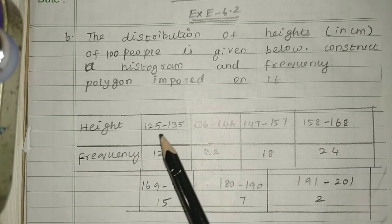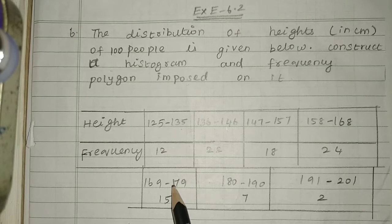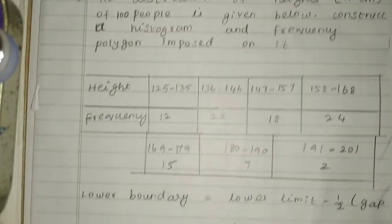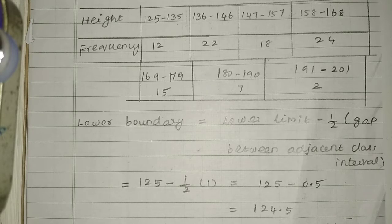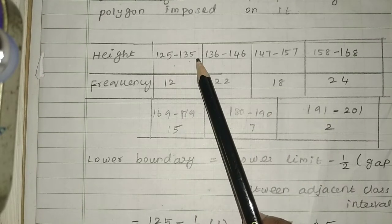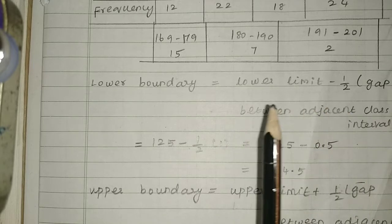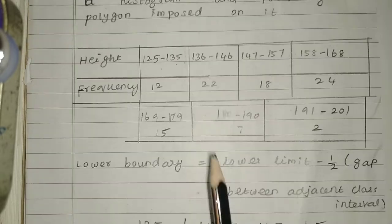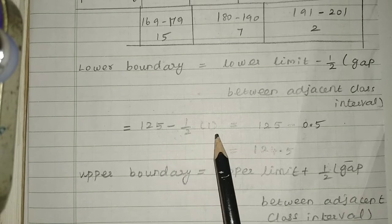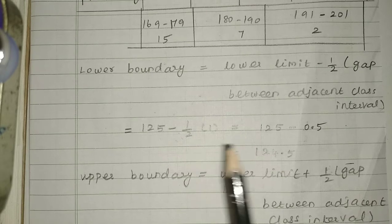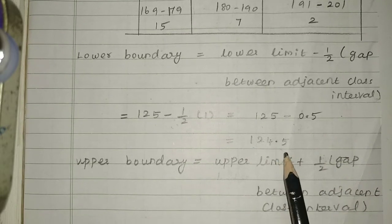The height values given are 125, 135, 136, 146 — these are not continuous values, so I am going to convert them. The lower boundary formula is: lower boundary = lower limit minus half of the gap between adjacent class intervals. The gap difference is 1, so: 125 minus 1/2 into 1 = 125 minus 0.5 = 124.5.